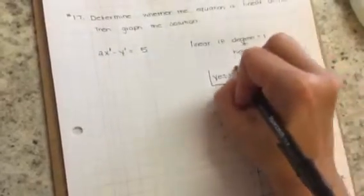So that's my first answer. So if it was like x squared, x cubed, anything other than 1, it would not be linear.